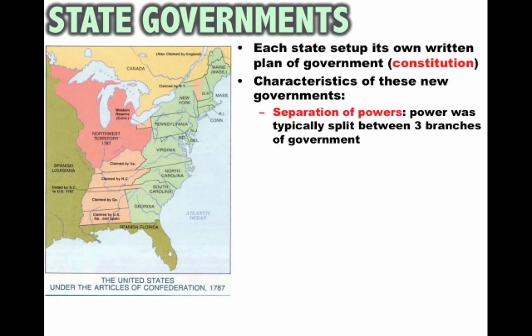The state constitutions do share some characteristics. One of those things is a separation of powers — power was typically split between three branches of government: the legislative branch, executive branch, and the judicial branch. Most of the power in many states was in the legislative branch; they were worried about centralized power, especially in the executive branch, so no too-powerful governors. The whole idea of separation of powers was to safeguard the liberties they were fighting for.